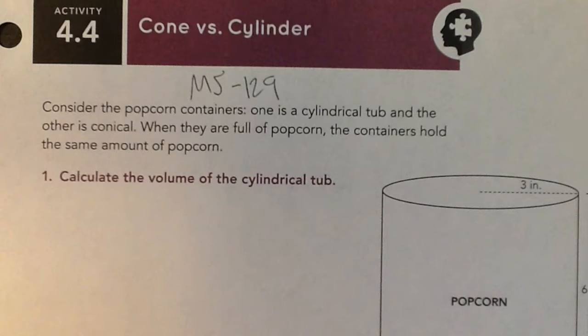Here on M5 129, we're comparing cones and cylinders. Consider the popcorn containers. One is a cylindrical tub and the other is conical, meaning cone. When they are full of popcorn, the containers hold the same amount of popcorn, so they have the same volume.